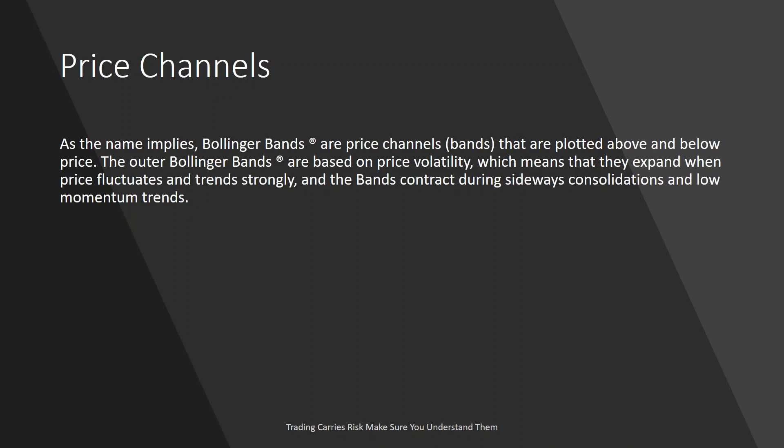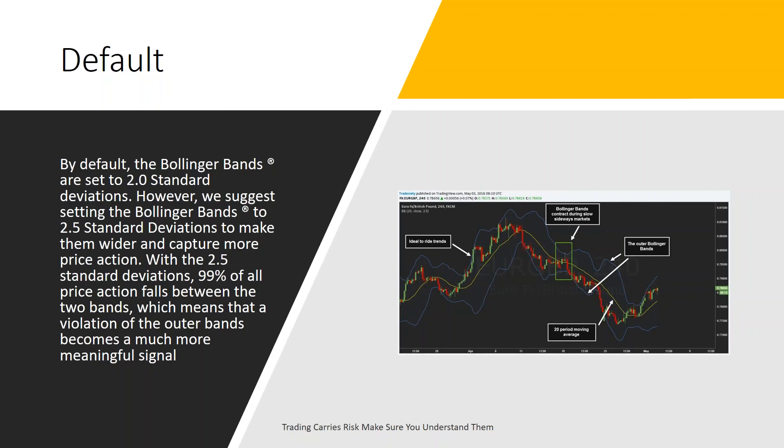Bollinger Bands are price channels plotted above and below the price. The outer Bollinger Band is based on price volatility, which means they expand when price fluctuates and trends strongly, and the bands contract during sideways consolidation or low-momentum trends. By default, Bollinger Bands are set at two standard deviations. Some suggest setting them at 2.5 standard deviations to capture more price action, but I basically tell all traders: don't adjust from John Bollinger's strategy — use a 2 and 20, which is what almost all charting systems will automatically drop on your chart.